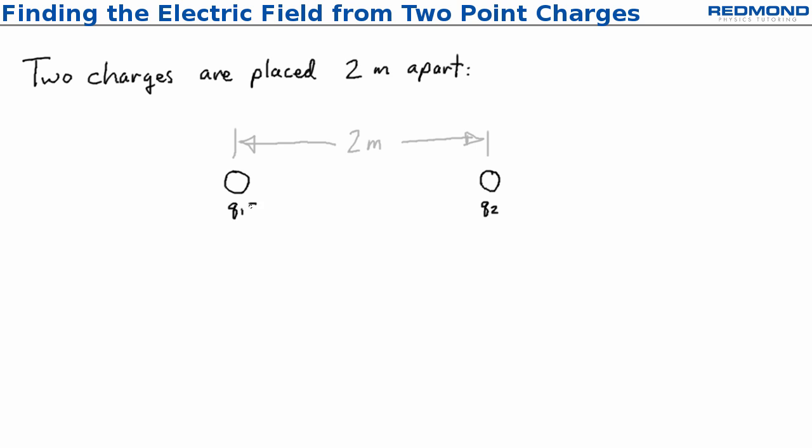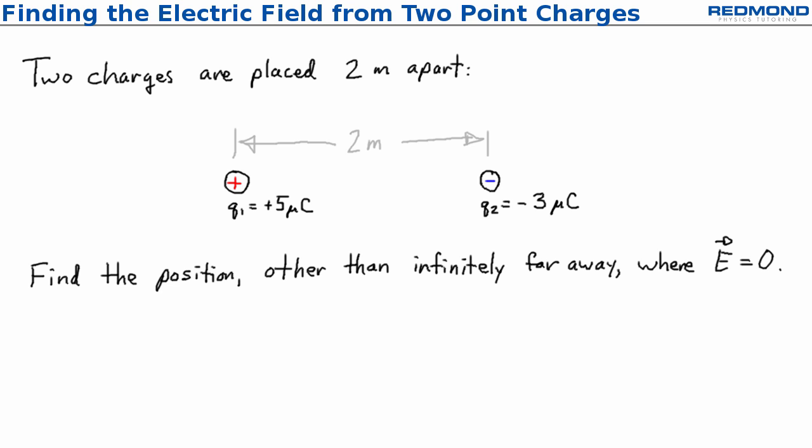I'm given two charges of positive 5 microcoulombs and negative 3 microcoulombs spaced 2 meters apart and asked to find where the net electric field is zero. There are two key ideas in this problem.